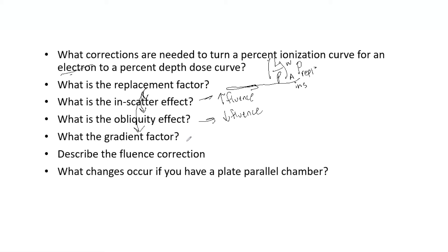The gradient factor is the displacement, an effective point of measurement. This is equal to 0.5 R cav. Now this is a radius of the air cavity, not just the radius of the chamber itself. That is of course dependent on the cavity radius, mean energy, and the gradient factor. And again, all these are in P replacement.